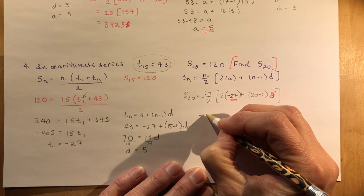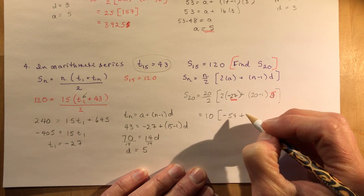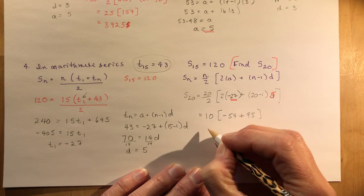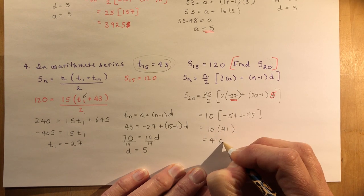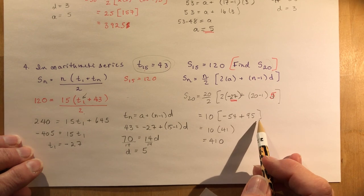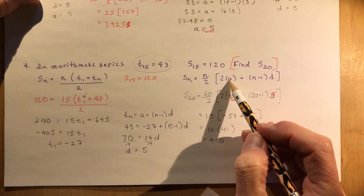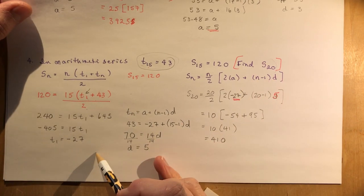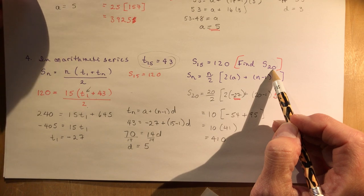Now the sum of 20 terms is straightforward: 10 times 2 times minus 27 plus 19 times 5. That's 10 times minus 54 plus 95, which is 10 times 41, giving 410. That was a bit tricky because you had to find a and d separately. Another approach: once you had a and d, you could find the 20th term and use the first-and-last-term formula to get the same answer.